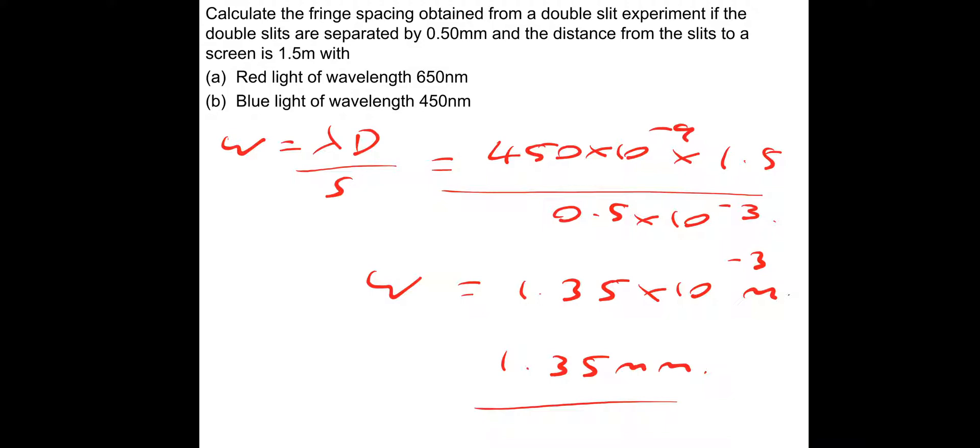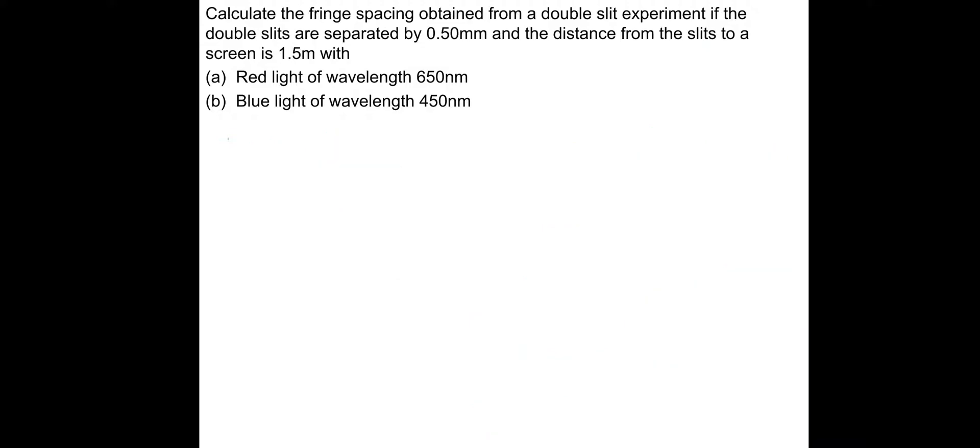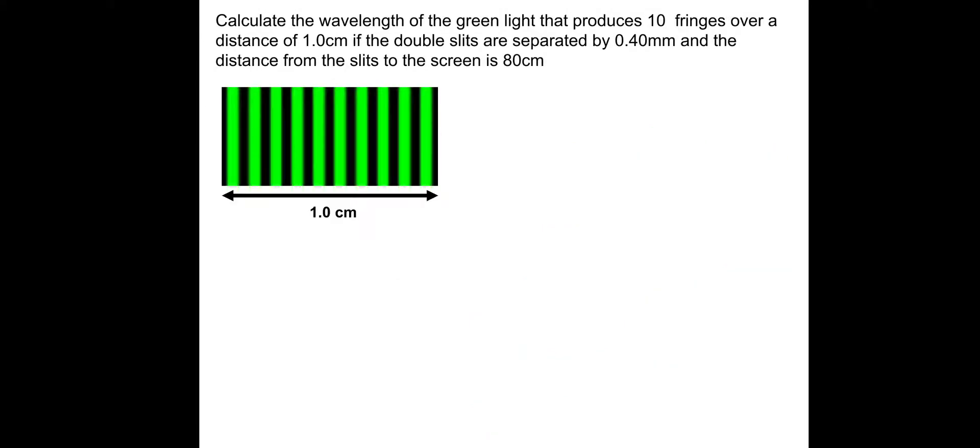Let's do one more practice question. Calculate the wavelength of the green light that produces 10 fringes over a distance of 1 cm if the double slits are separated by 0.4 mm and the distance from the slits to the screen is 80 cm. First, we need the fringe spacing W. The fringe spacing will be 1 cm, so 0.01 meters, divided by the number of fringes, 10 fringes. So 0.01 divided by 10 gives us 1 × 10^-3 meters for the fringe spacing.